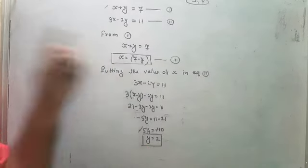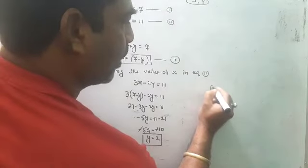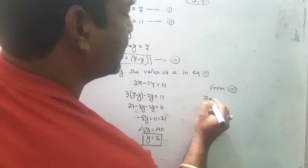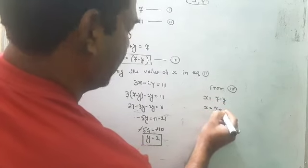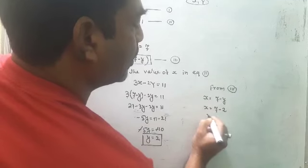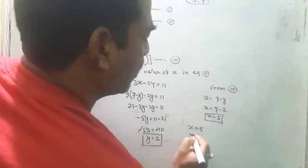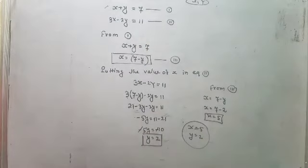Now putting the value of y in equation three to find x: x is equal to 7 minus y, so x is equal to 7 minus 2, giving x is equal to 5. Therefore x is equal to 5 and y is equal to 2. This is how you solve the equation to find the value of x and y by substitution method.